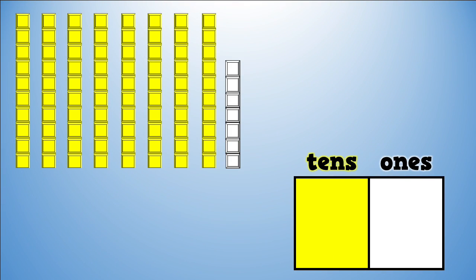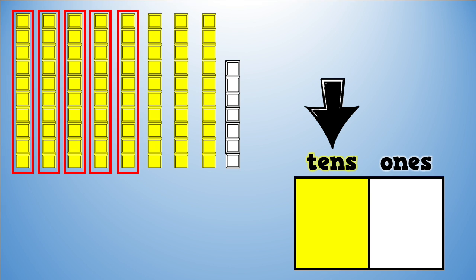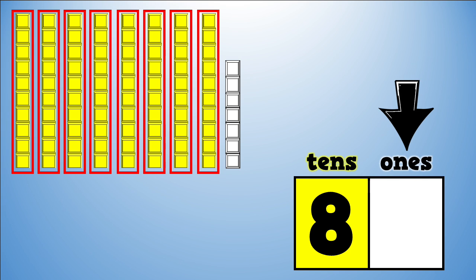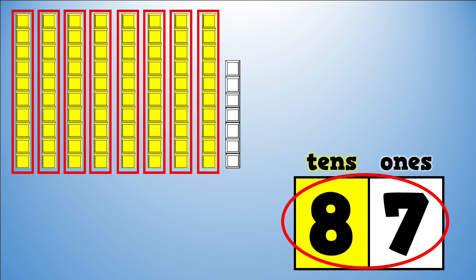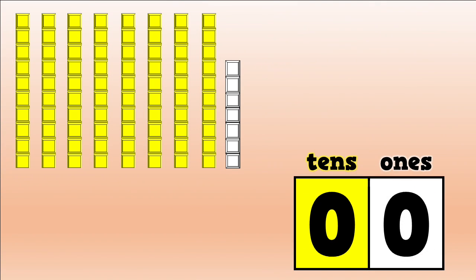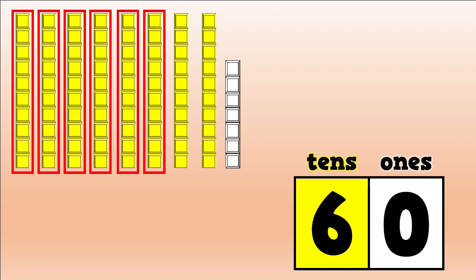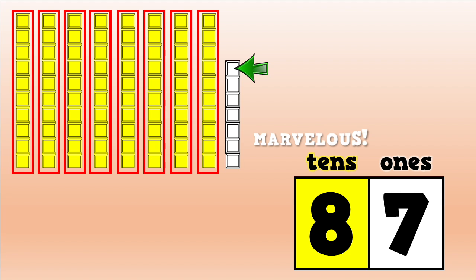Let's try another number. Count the towers of ten: one, two, three, four, five, six, seven, eight. Eight groups of ten. Count the extra ones: one, two, three, four, five, six, seven. Seven extra ones. What number did we make? Eighty-seven. Yep! Skip count and count on to check: ten, twenty, thirty, forty, fifty, sixty, seventy, eighty, eighty-one, eighty-two, eighty-three, eighty-four, eighty-five, eighty-six, eighty-seven. Marvelous!